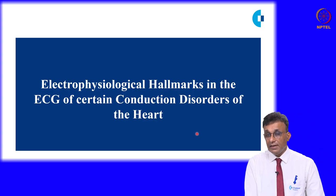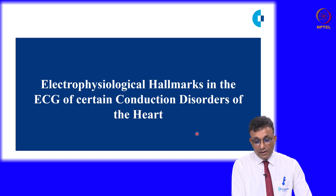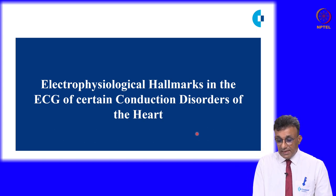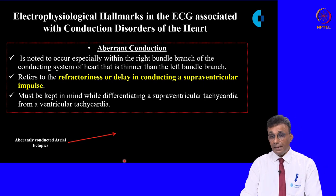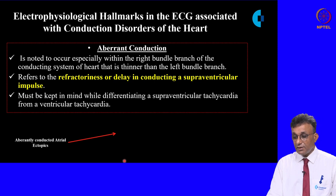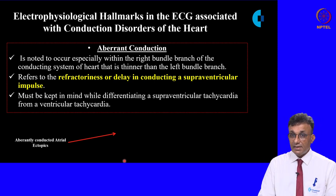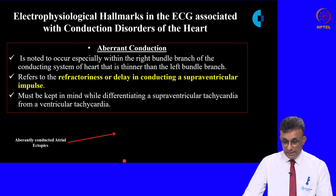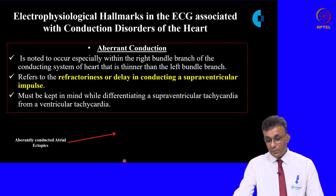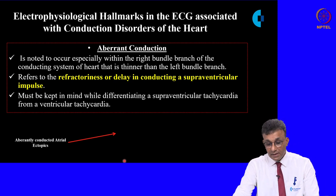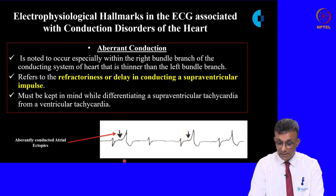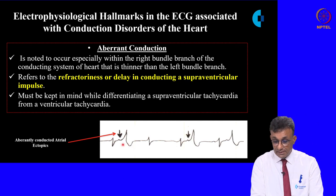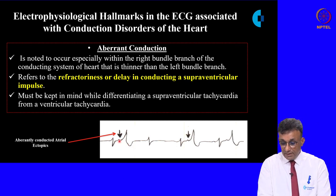Having covered the three sinus rhythms, we now look at electrophysiological hallmarks in certain conduction disorders. Aberrant conduction is a refractoriness or delay in conducting a supraventricular impulse into the ventricles, important when differentiating supraventricular tachycardia from ventricular tachycardia. In this ECG strip, you can see the P wave occurring after the QRS complex because of aberrant conduction.